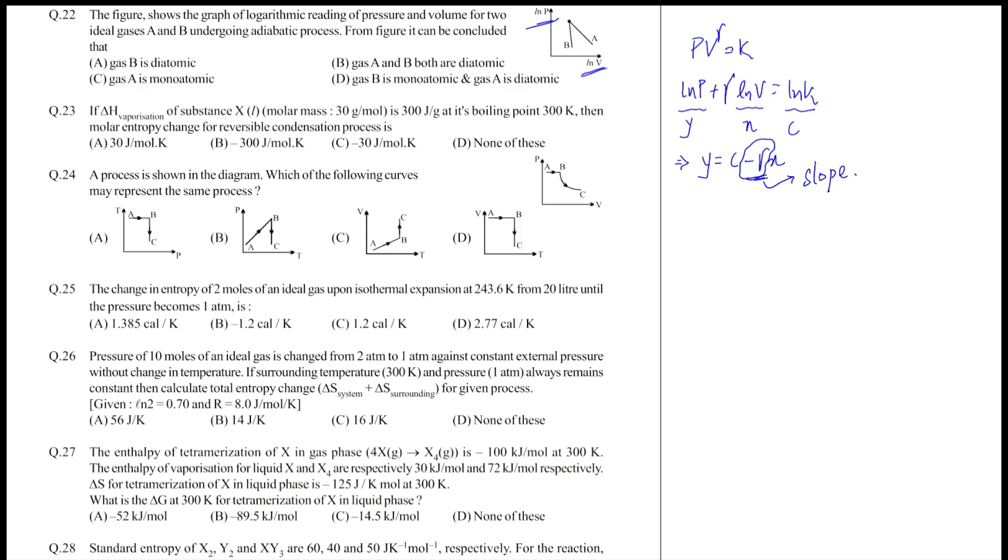The next question is 24: which of the following curves may represent the same process? A to B is a process in which pressure is constant—it's an isobaric process—and B to C looks as if it's an isothermal process, although it could also be an adiabatic process. We'll find out according to the graph.